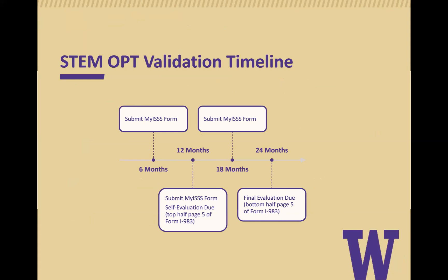Here we provide a timeline of what and when to report your validation report. At 6 months, you will fill out the request form. At 12 months, you will fill out the request form and fill out page 5, the top part of the self-evaluation. At 18 months, you will fill out the request form. At 24 months, you will fill out the bottom half of page 5 for the final evaluation.